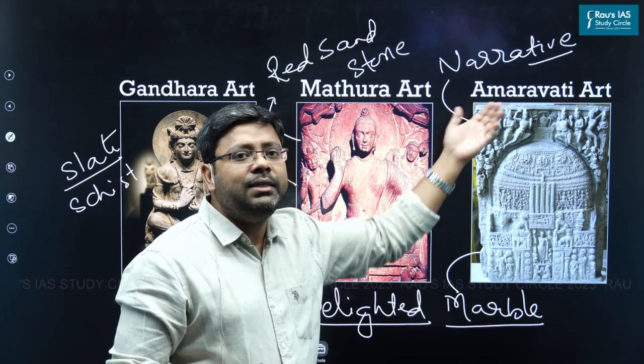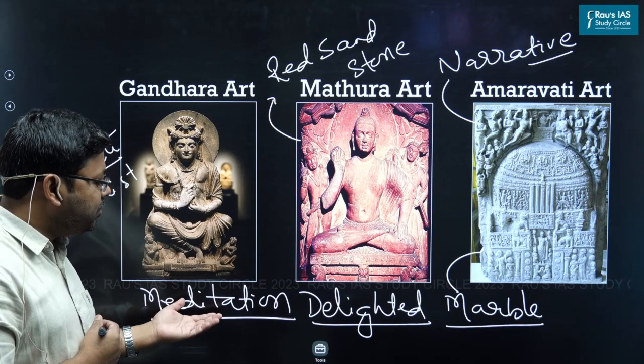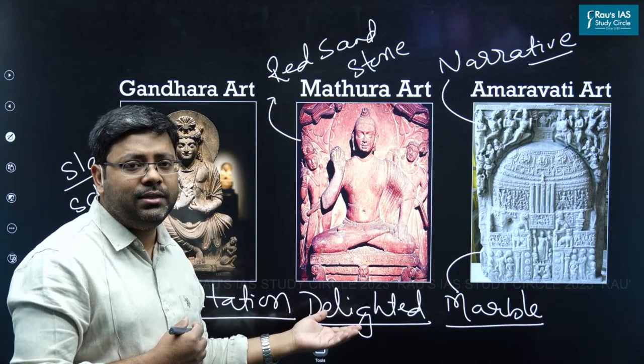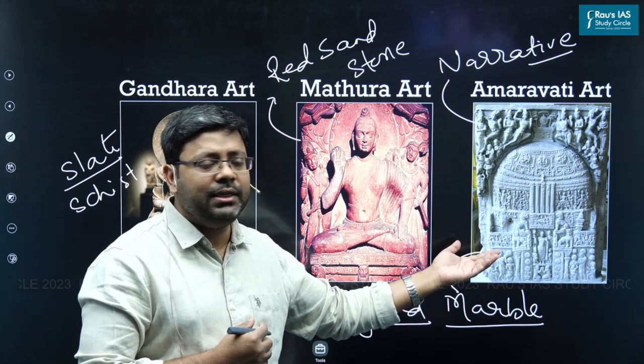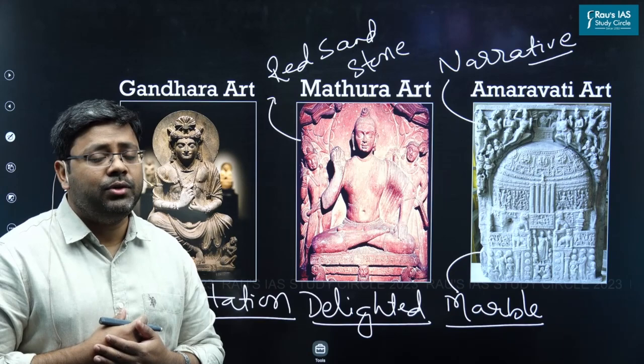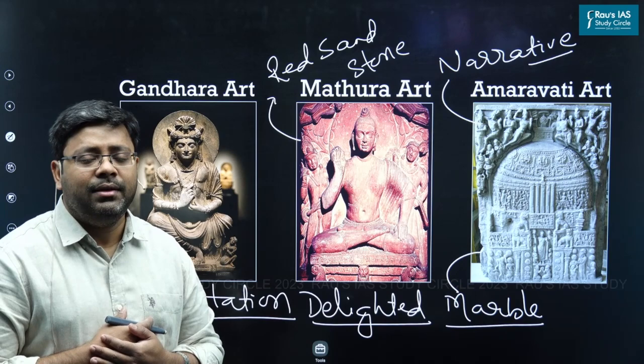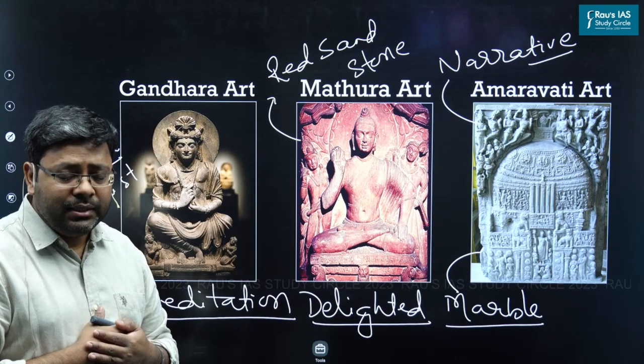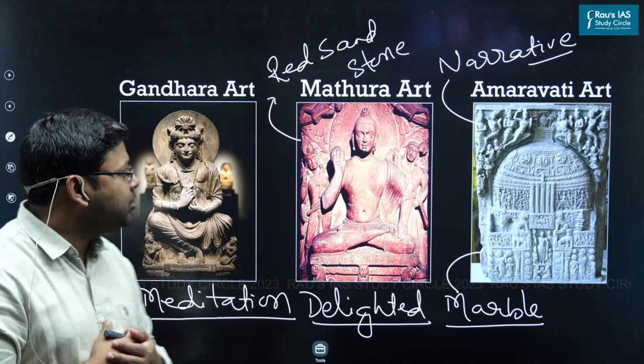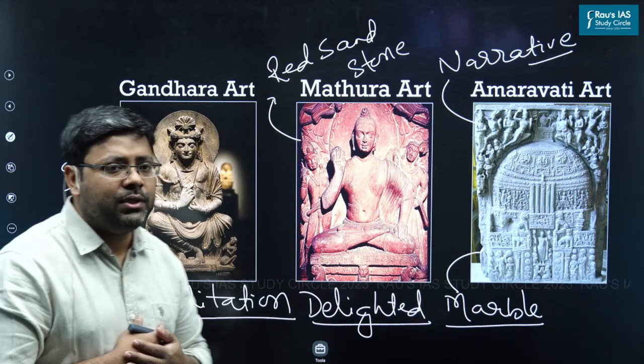To remember: in Gandhara art, Buddha is shown in a spiritual way; in Mathura art, Buddha is shown delighted; and in Amaravati art, the story of Buddha is represented — it is narrative art. After this discussion, you can solve many objective questions as well as four subjective questions: the difference between Gandhara and Mathura art; between Mathura and Amaravati art; between Gandhara and Amaravati art; and a comparison of all three art forms together.